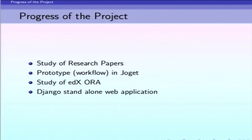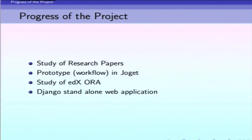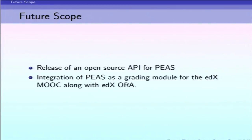These are the various stages we encountered in completing the project. Initially we studied various research papers and developed our method PEES. We built a prototype in Jogit, a workflow engine, but it could not be integrated with EDX, which was our long-term goal. When EDX released its platform code as open source, we studied EDX ORA and attempted enhancements, but EDX ORA had not been successfully installed. So in the last three days of our internship, we built a standalone web application in the Django framework. The future scope is to integrate our Django system with the EDX platform and build an API for that purpose.